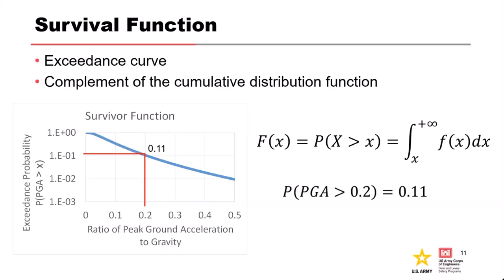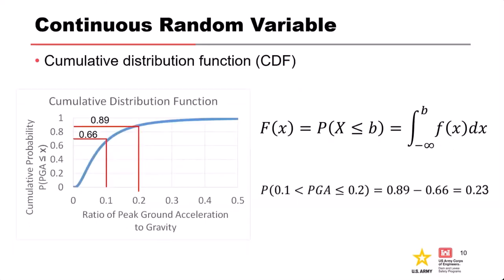The key point is that it's the probability of greater than 0.2, not the probability of exactly 0.2. A common mistake is failing to discretize hazard curves into slices or bins — if you just use the exceedance probability directly, you'll end up double-counting the hazard and getting an incorrect risk estimate. In practice and risk analysis, we always work with these kinds of intervals.